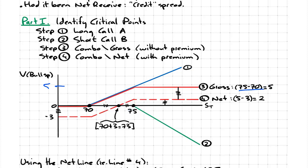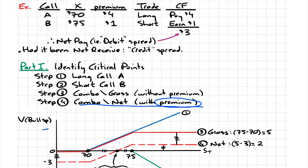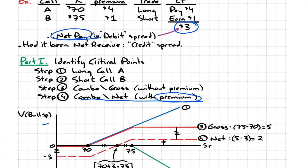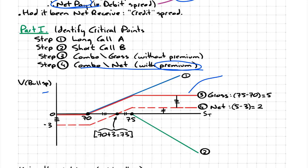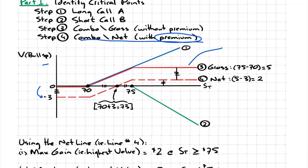The final step is to take the premium into account. You have to ask yourself: did I pay the net premium or did I receive it? As we determined, this $3 was a net pay. So the solid red line is going to shift down by three. The distance between the solid red line and the dashed red line throughout is consistent, represented by the premium — so that gap is always three.